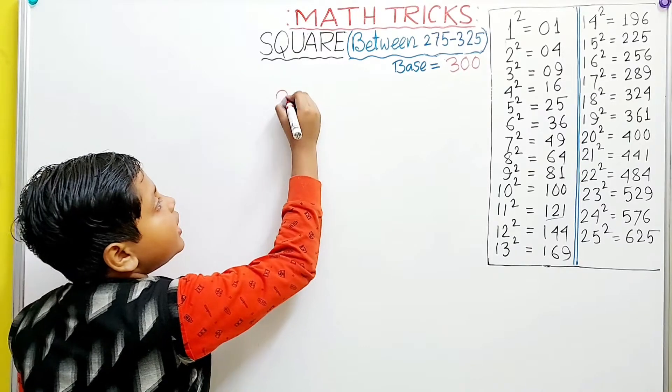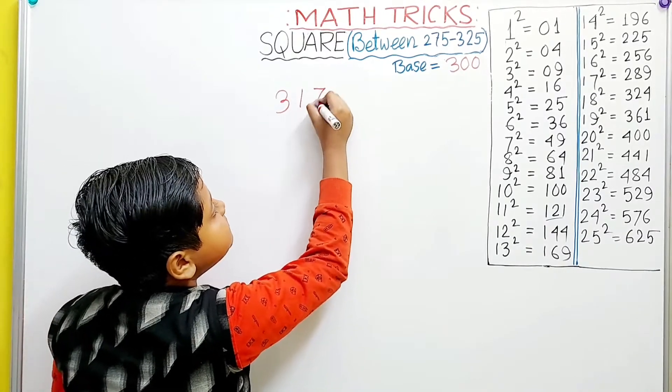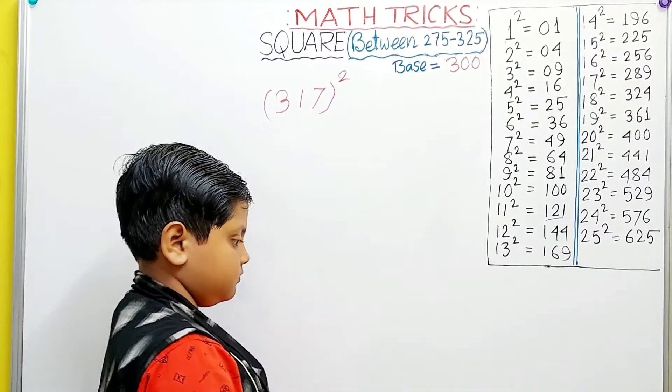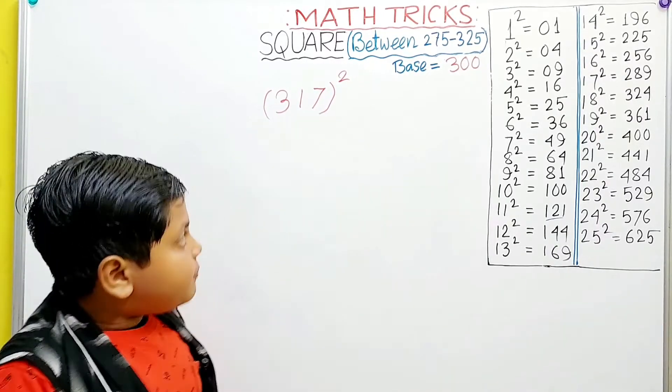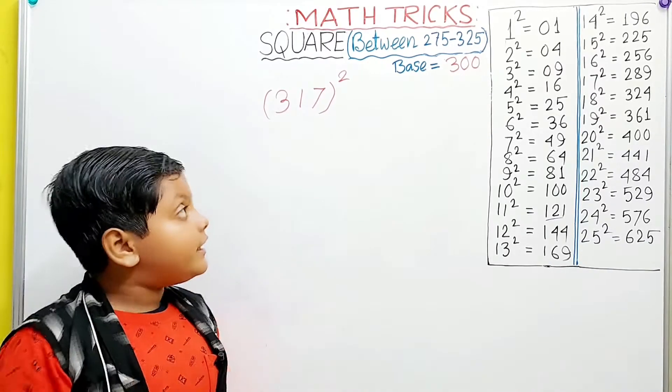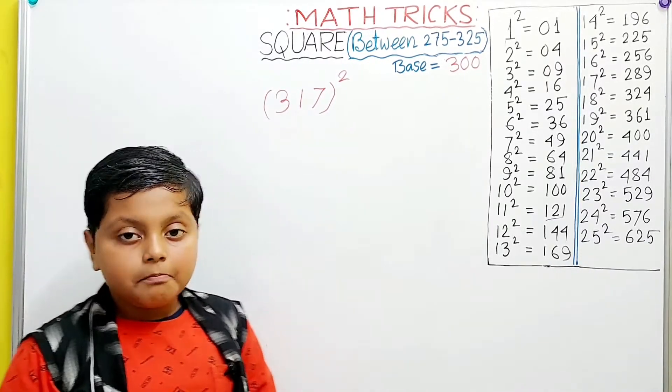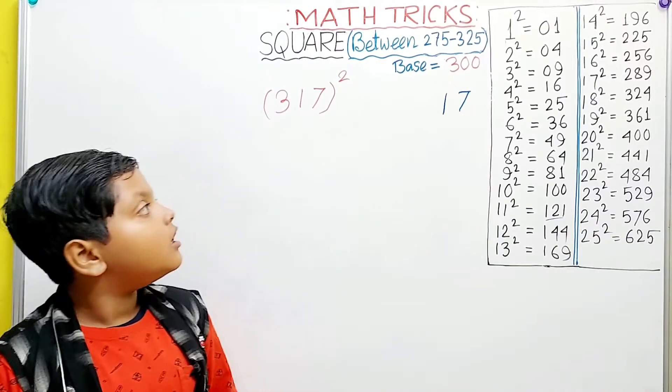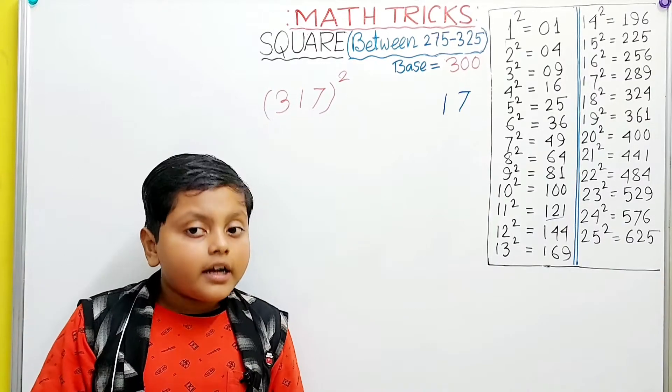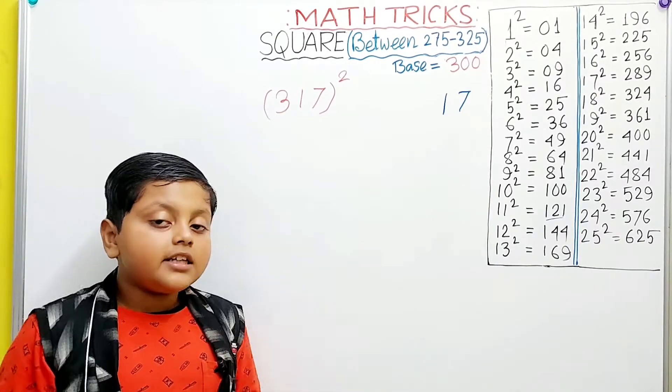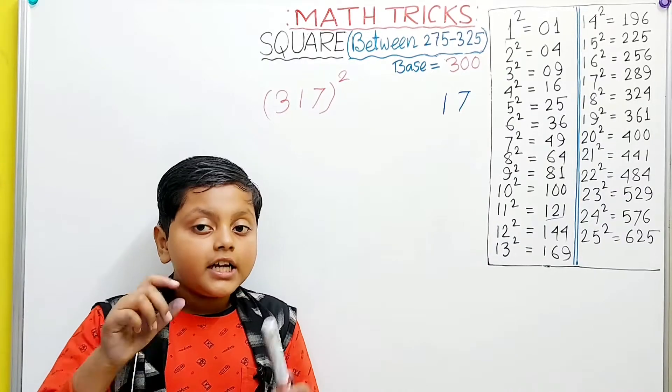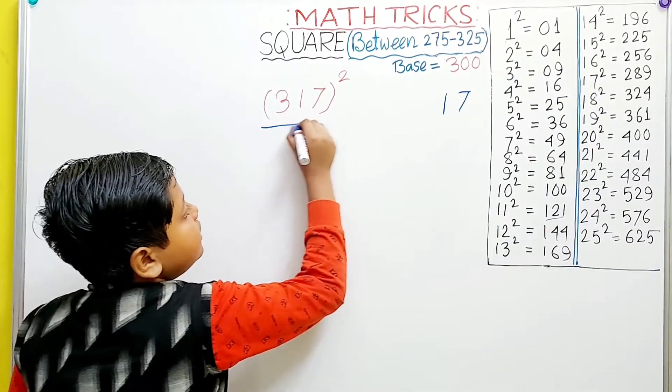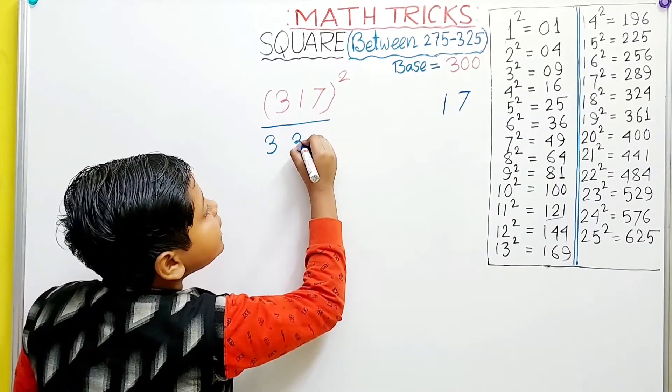Now our next example is, say, 317. Firstly, it is greater than the base 300 by 17. Because it is greater than 300, the base, we again have to add the difference to 317, which is 17. So 317 plus 17 equals 334.